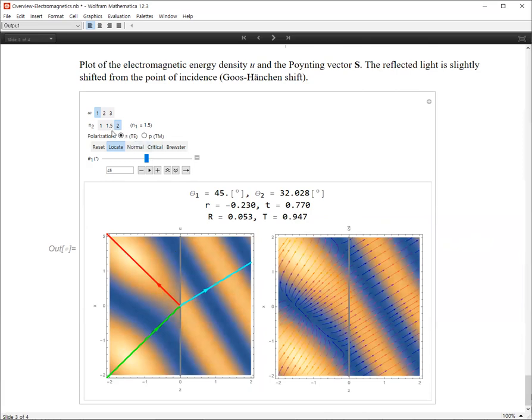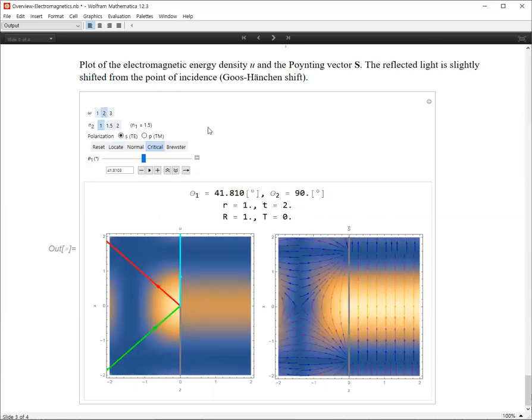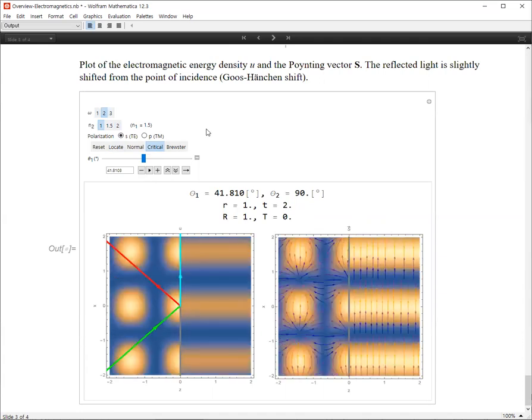For n2 smaller than n1, we can have the critical angle. So here, go to omega equals two. So this is the case for the critical angle case. And the angle is 41.81 degrees.